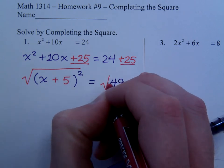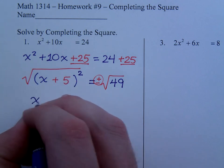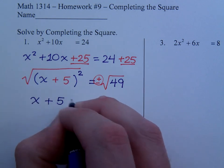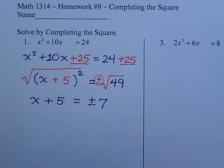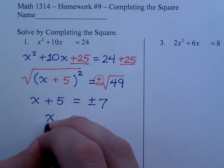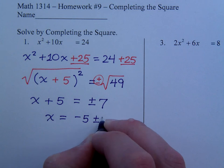By taking the square root of both sides, remembering your plus or minus. You end up with x plus 5 equals plus or minus 7. And you've got to get x by itself.